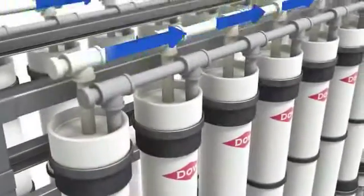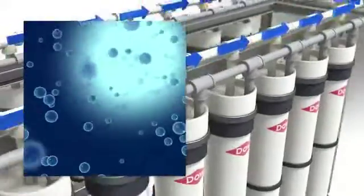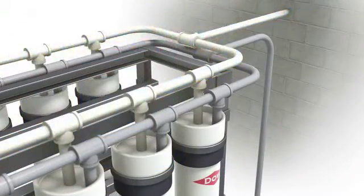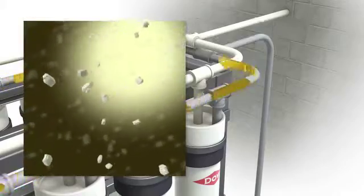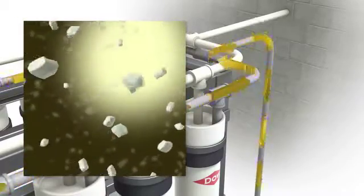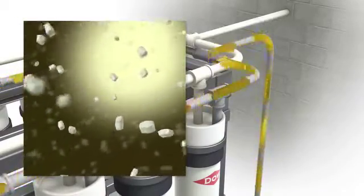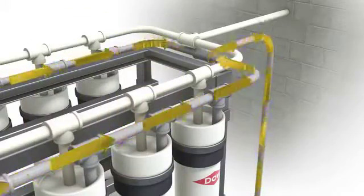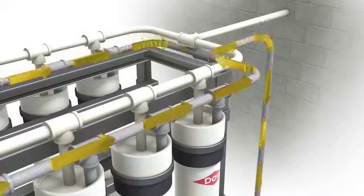Once the desalinated water leaves the membrane, it is clean and free of almost all salt ions and other compounds. The wastewater that was not desalinated is now highly concentrated with salt ions. This waste stream is called brine. The brine is discarded in injection wells and pumped back into the ocean.